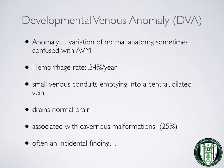The hemorrhage rate associated with a DVA is only about 3 tenths of a percentage point per year. They're small conduits that empty into a central dilated vein and drain normal brain tissue. They're often associated with cavernous malformations and are an incidental finding in most cases.